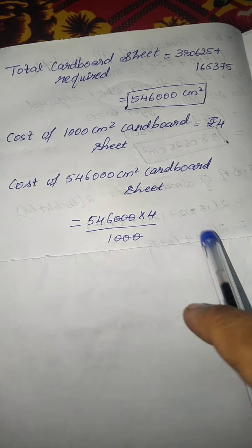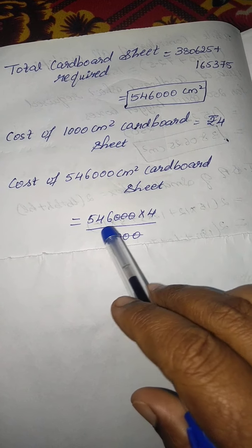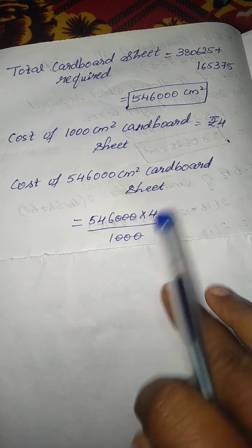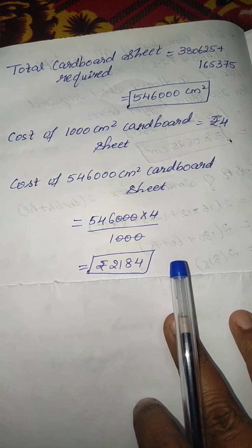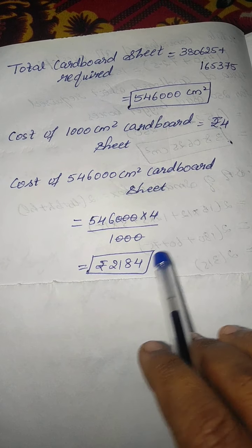Then what we should do means multiply with 4 and divide by 1000. 30-30 skills cancel. 546 into 4 you have to do. So total amount you will get it as rupees 2184. This is your total sum, children.